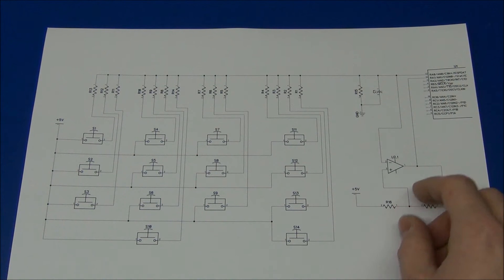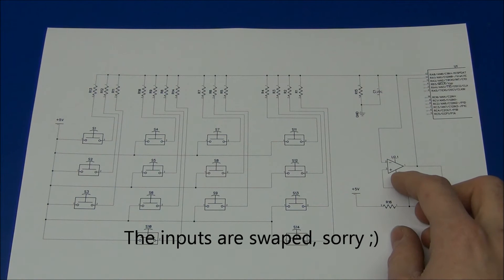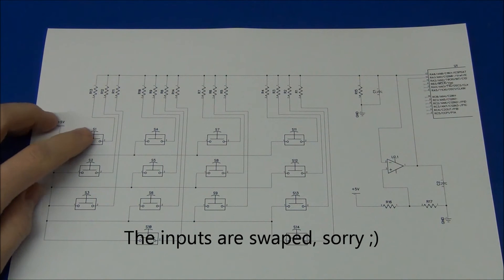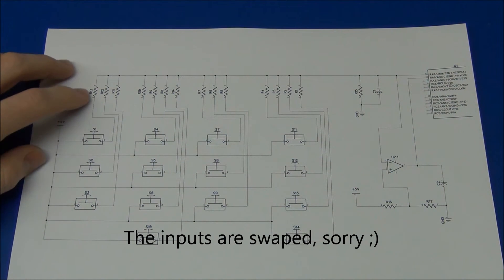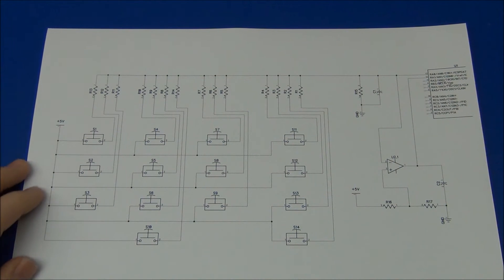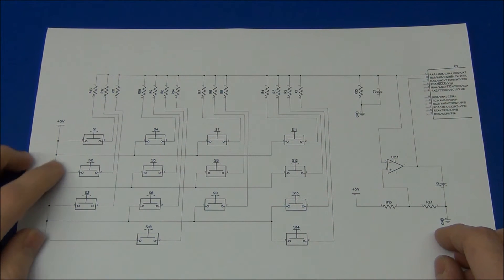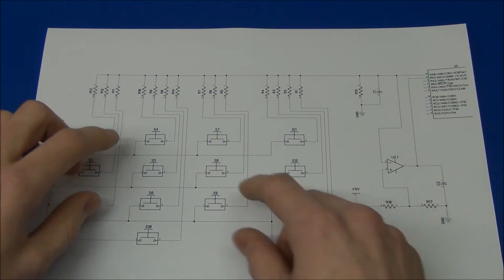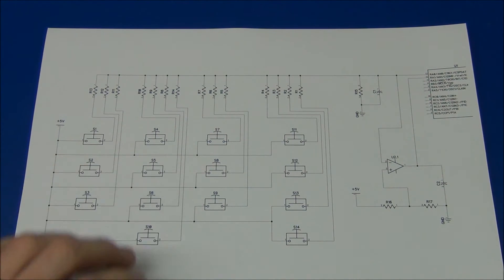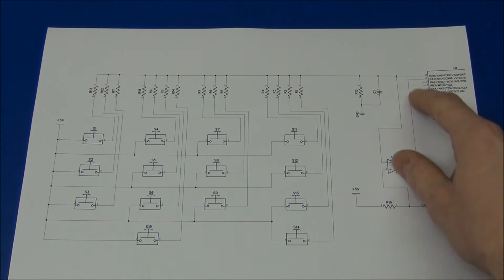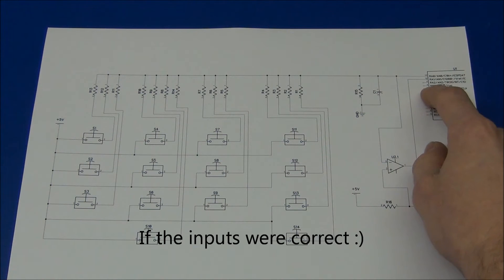Now what this is is a comparator. So if we say switch 1 over here has the lowest voltage when it is pressed, we choose this reference for the comparator to be just a little under this. So no matter which button we press, this comparator will make the output high. And we can use this as an interrupt to read the ADC.